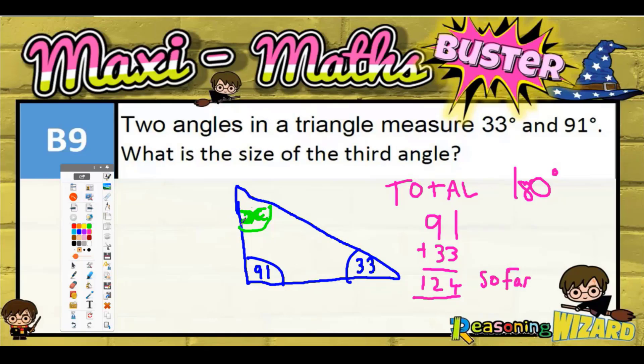What that means is we start with the 180, which is all three angles together. Any triangle is always 180. You take away what we've got so far, 124, and whatever's left is going to be the missing angle x.